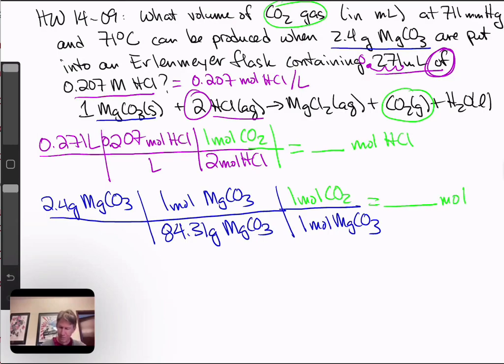Oh, why did I write moles of HCl there? That should be moles of CO2. Moles of CO2. We can get our smaller amounts - I'll let you do that - but whichever one is smaller, you're going to then take and plug into a PV equals nRT.